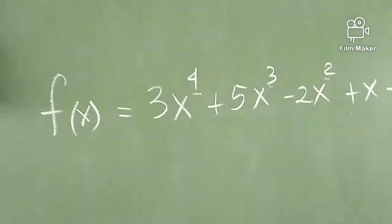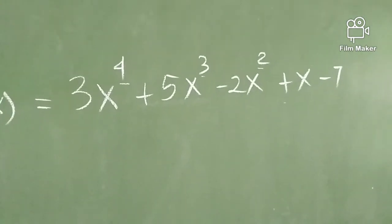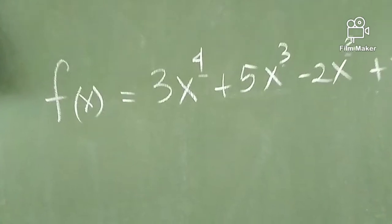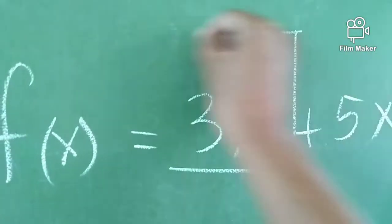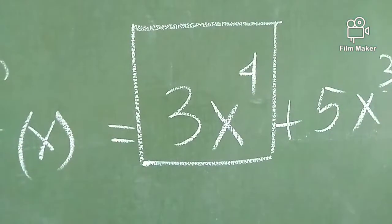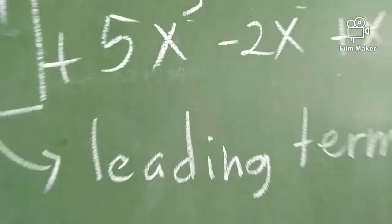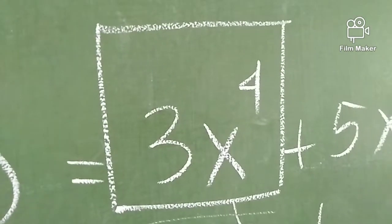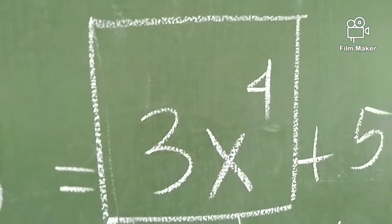Look carefully at the arrangement: 3x to the 4th plus 5x cubed minus 2x squared plus x minus 7. The first term, as I said, should have the highest exponent. And that is what we call the leading term.